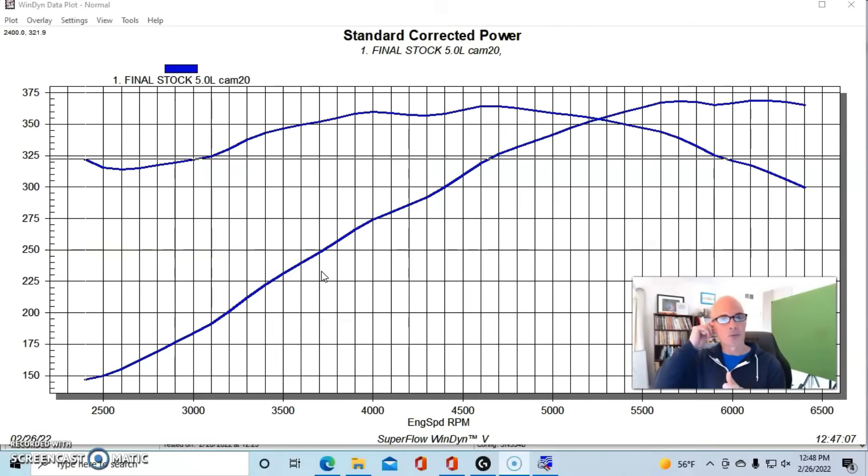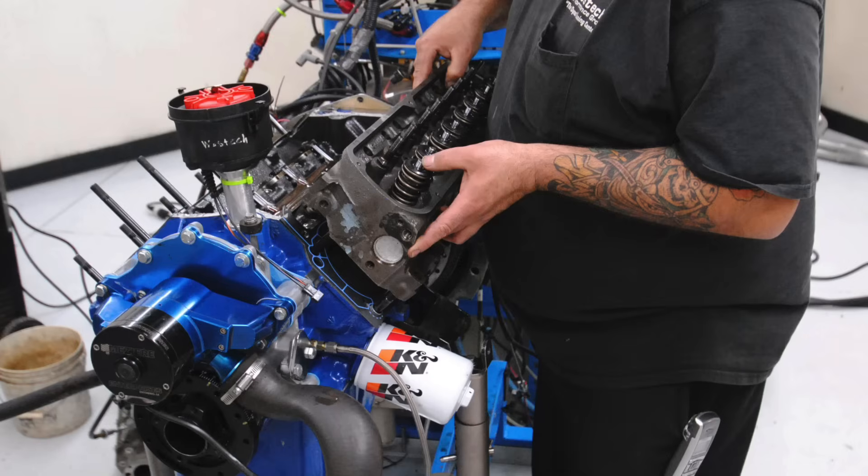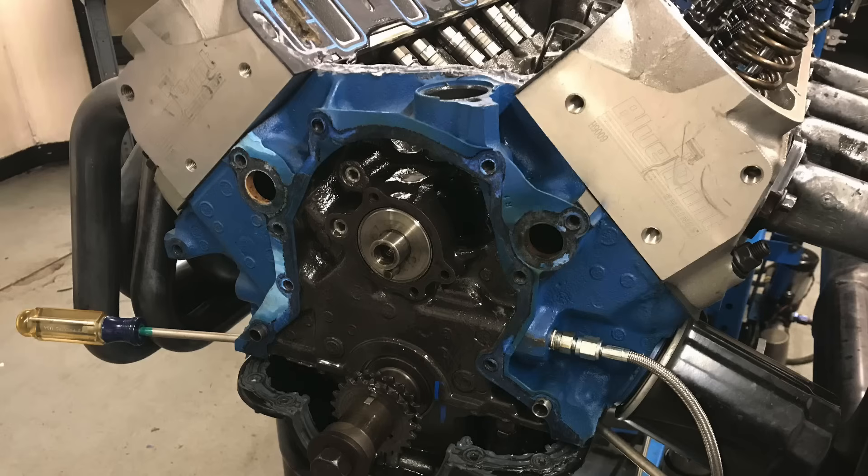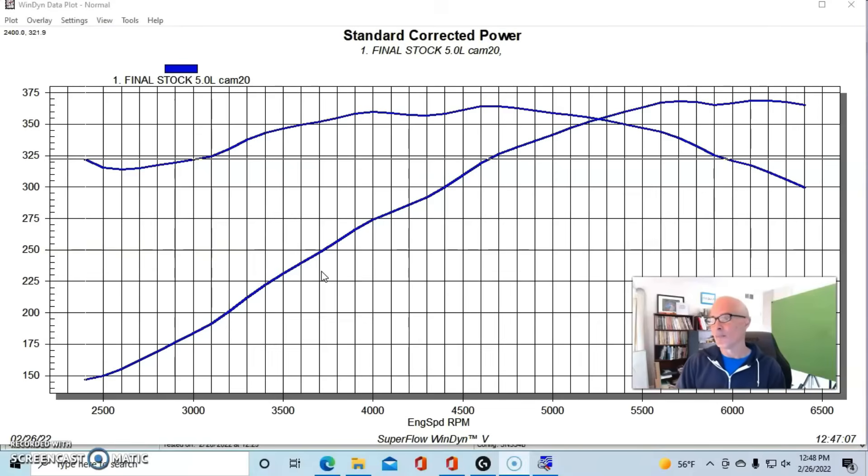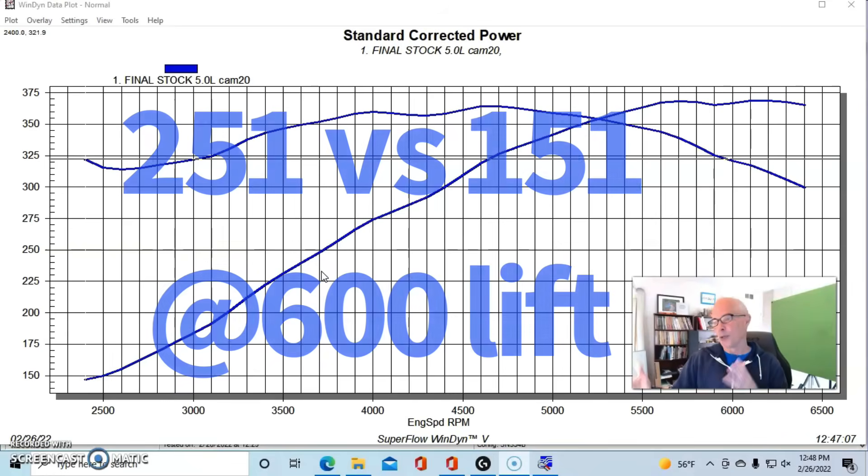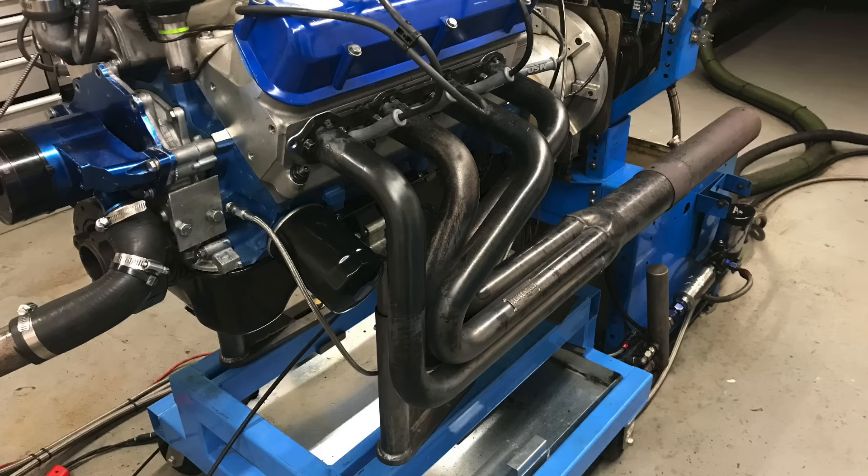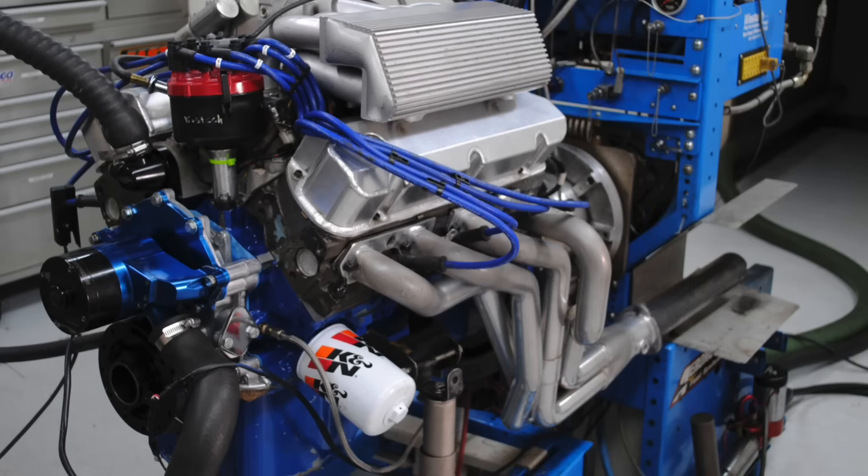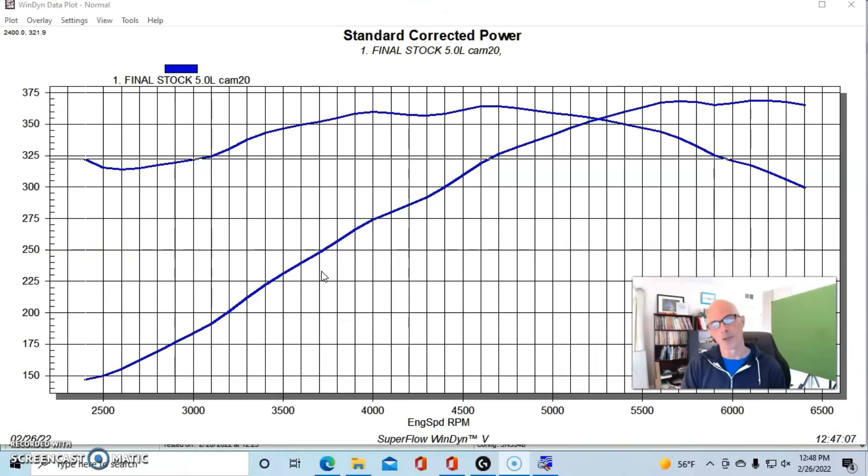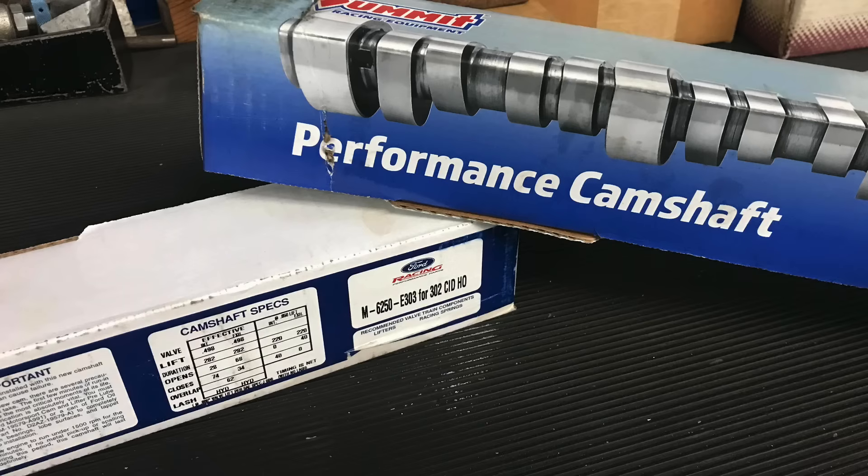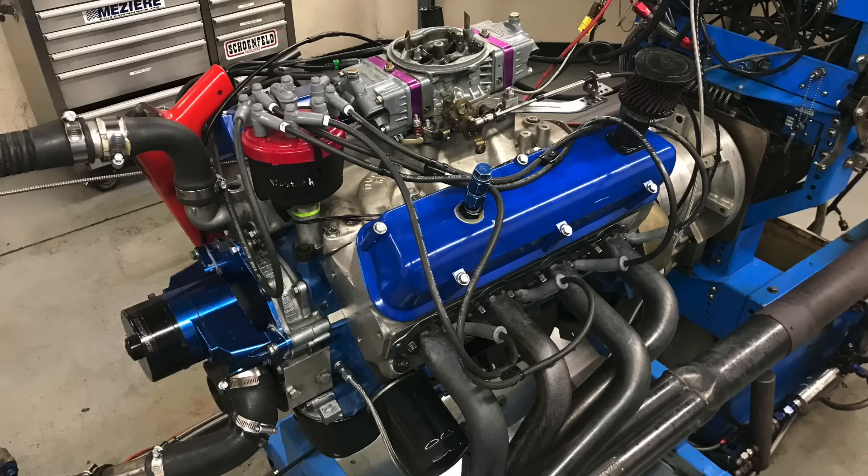The big thing was really the cylinder heads. Where we ran the stock cylinder heads on the previous combination, this one was equipped with a set of Blueprint aluminum ASCAS 190cc heads, and those flow about 240 CFM according to Blueprint, which would put it a good 70 to 80 CFM more than the factory heads. On this combination, we also had slightly bigger headers, inch and three-quarter with bigger collector extensions.